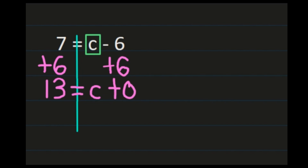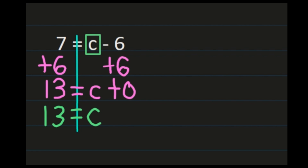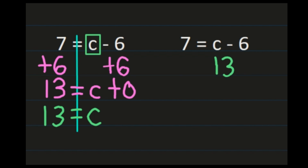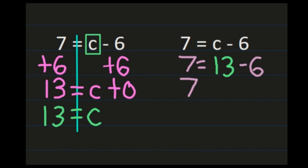I can simplify because c plus 0 is simply c. So on the right-hand side I'm going to have c, and on the left-hand side I didn't do anything to the 13, so the 13 will remain the same — 13 equals c. We're also going to check this one: we take the original equation 7 equals c minus 6, and plug in the 13 we found for c. We said c equals 13, so I'm going to substitute 13 for c: 13 minus 6 equals 7. Does 13 minus 6 actually equal 7? Well, 13 minus 6 is 7, so I have 7 equals 7, which is a true statement. So where I solved for c and found it to be 13, that is the correct answer.